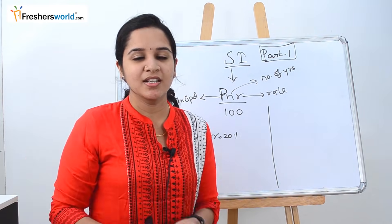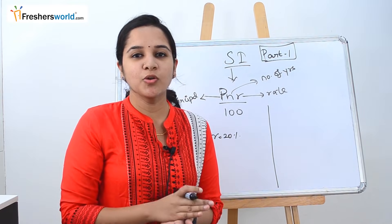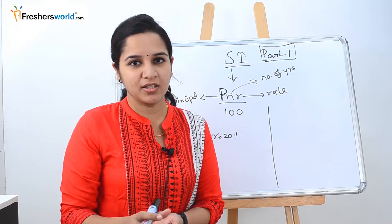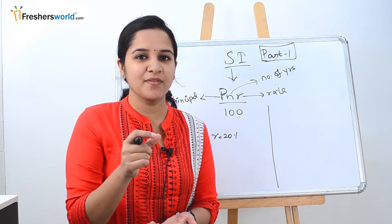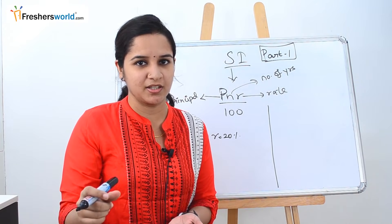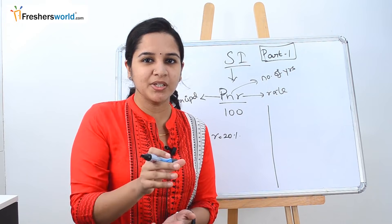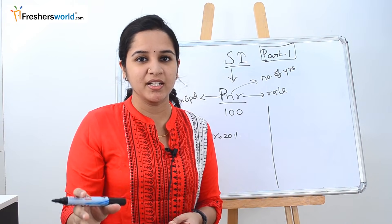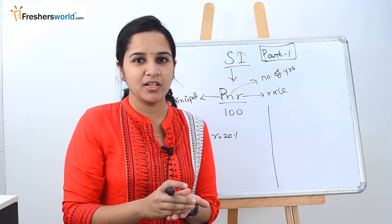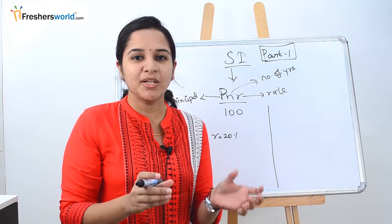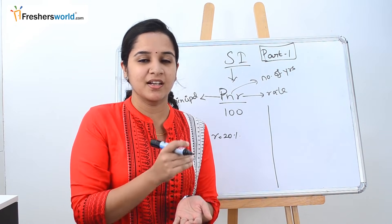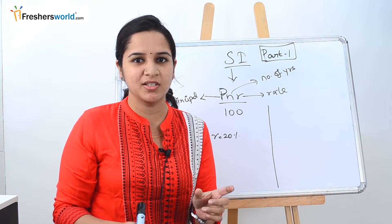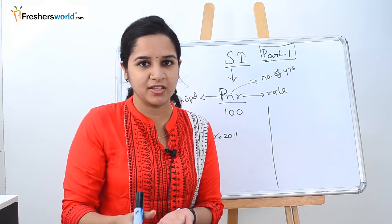So what is simple interest? Let's say you put 1000 rupees in a bank and keep it for 2 to 3 years. The interest will be the same for each and every year. That is the difference between simple interest and compound interest. In compound interest, the accumulated interest at the end of the year is added to the principal for the next year. Whereas in simple interest, the same principal amount is used for each and every year.